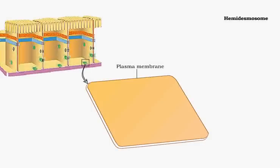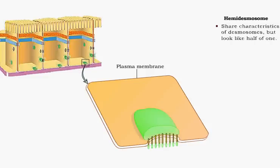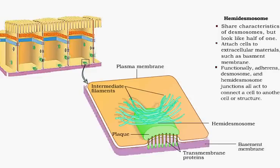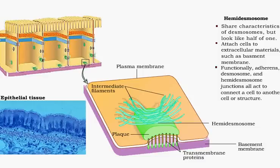The hemidesmosome, or half-desmosome, provides strong attachments between cells and other extracellular materials, such as the basement membrane of epithelial tissues. Hemidesmosomes are most abundant in tissues that undergo constant frictional or abrasive forces.